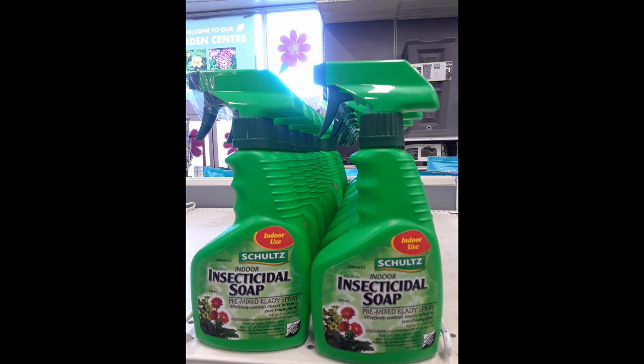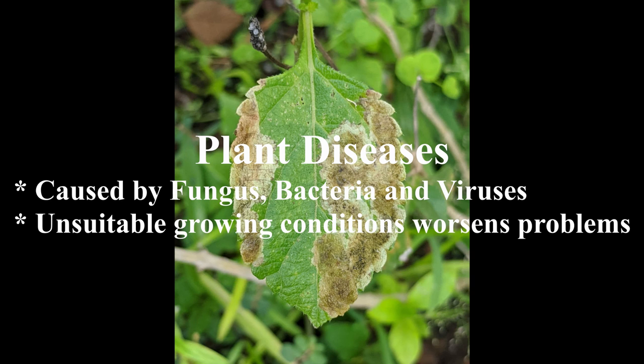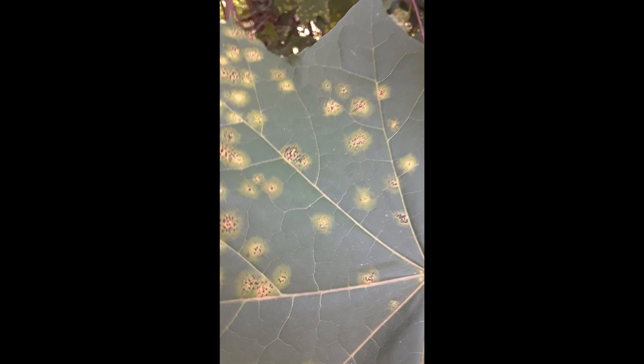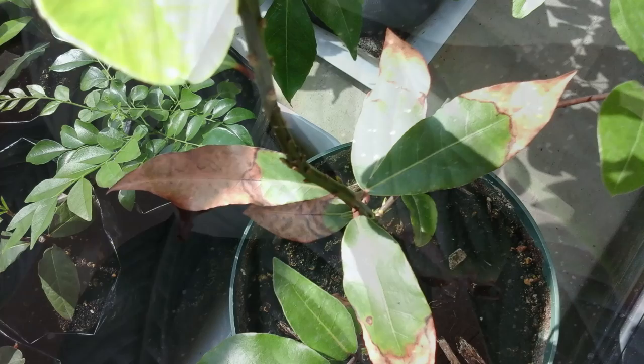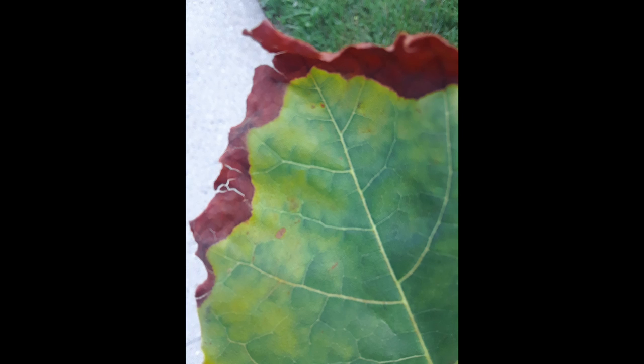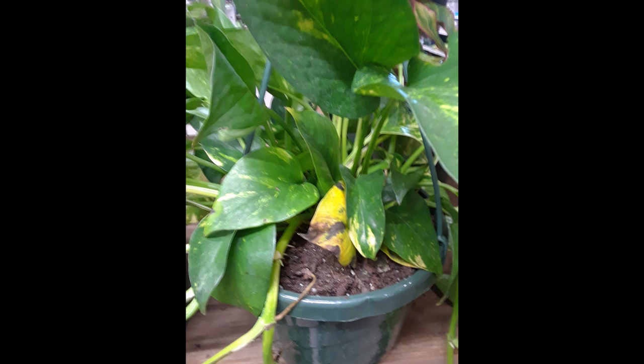Plant diseases may be caused by various organisms such as fungus, bacteria, and viruses that are often difficult to diagnose. Some plants are more susceptible to certain diseases, and the symptoms may affect different parts of a plant. Diseases tend to affect plants that are already growing under poor or unsuitable growing conditions. To identify diseases, examine leaves and stems carefully for symptoms such as spotting, lesions, discoloration, or a general appearance of poor growth. Any leaves or plant parts that appear diseased should be carefully removed and discarded.